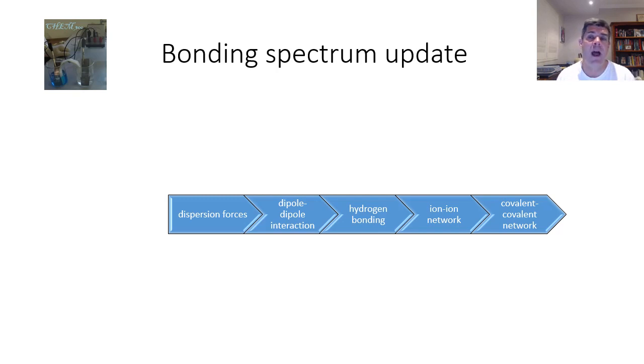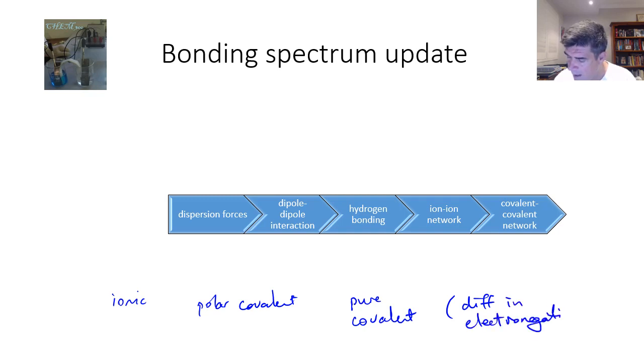So we were looking before at the bonding spectrum, it's one of the things that we looked at in one of the earlier videos, when we were looking at the span from ionic to polar covalent to pure covalent compounds. And this continuum or spectrum we looked at on the basis of differences in electronegativity, where we have pure covalent compounds where the electronegativity difference is zero.